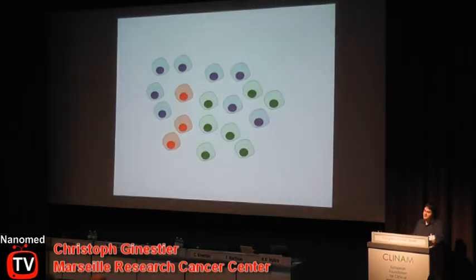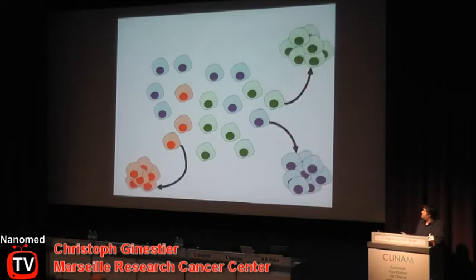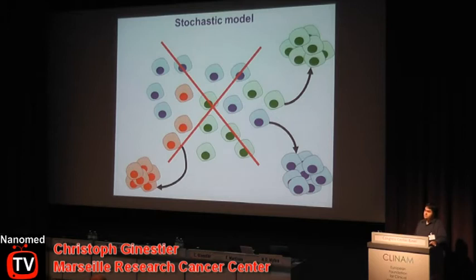If you try to model the cellular heterogeneity, you can imagine two different models. The first one is that all the cells are equally tumorigenic. In other words, if you isolate one cell from the tumor bulk, this cell will be able to generate a new tumor. If that is true, what you want to do is ensure that you eradicate all the cancer cell population to achieve a true cure of cancer.